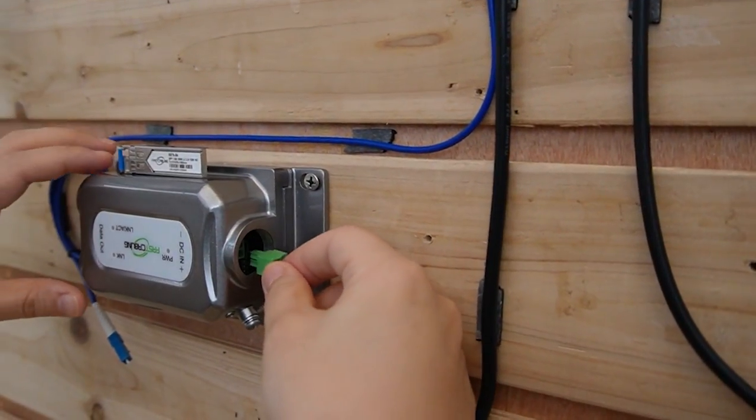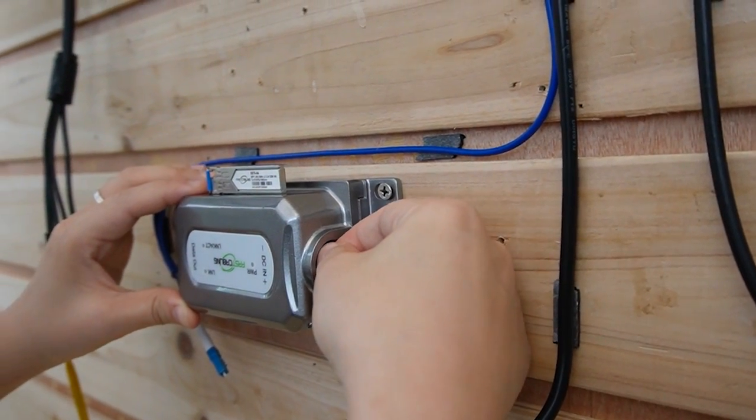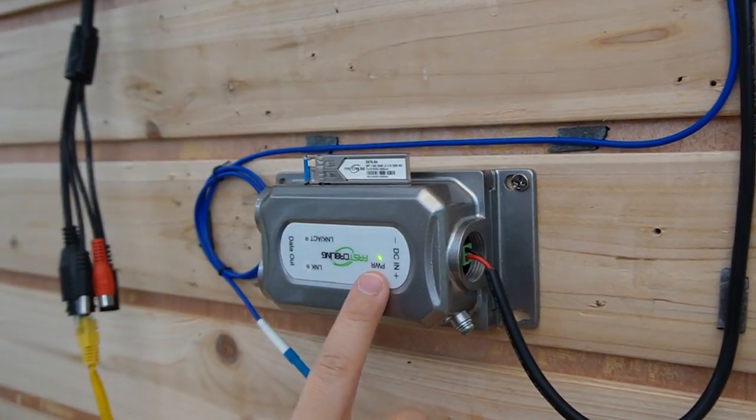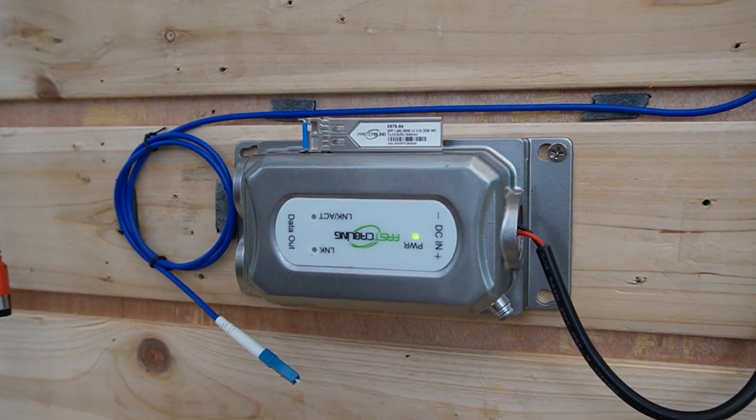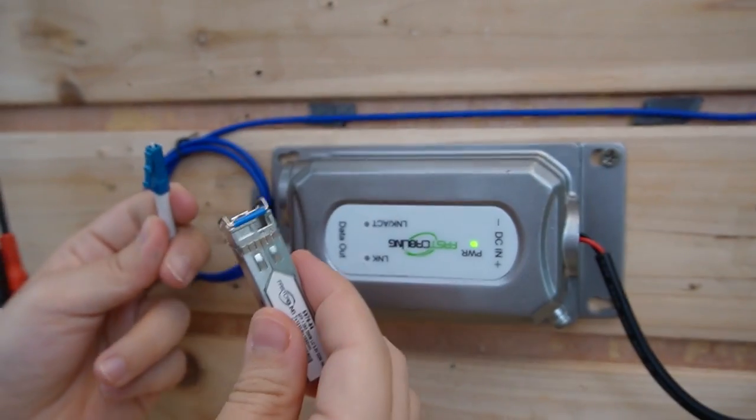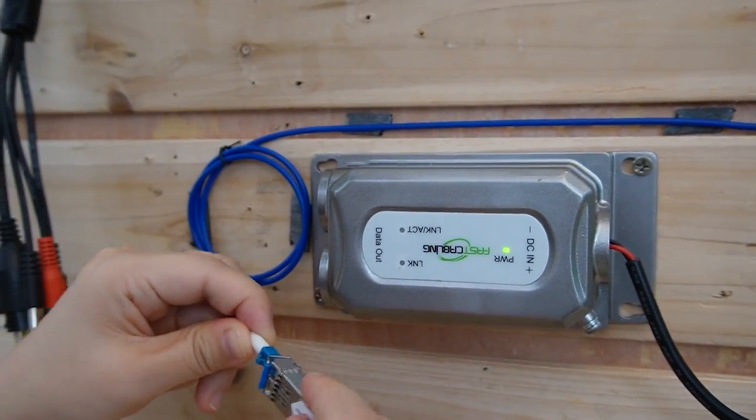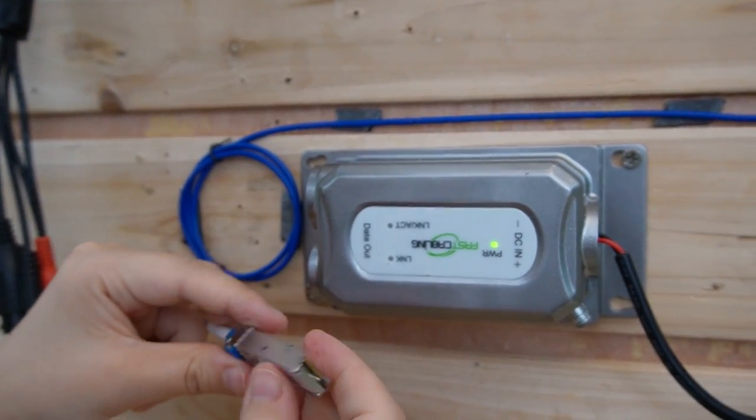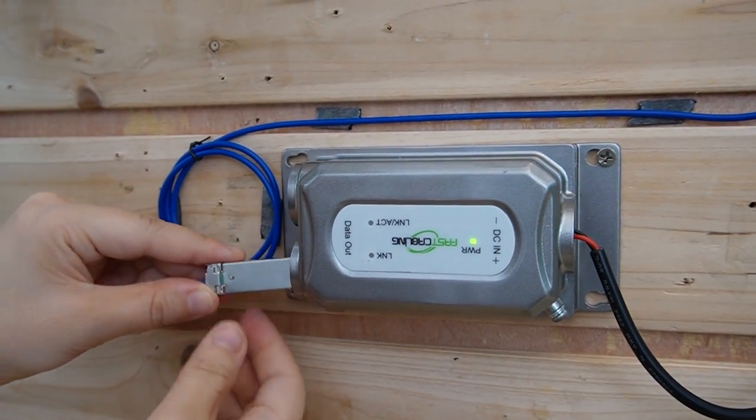Now let's put in the power source for our media converter. And you can see the indicator light is on instantly. And use the SFP transceiver to connect with the fiber cable first. And plug it in.